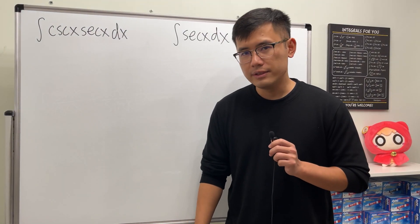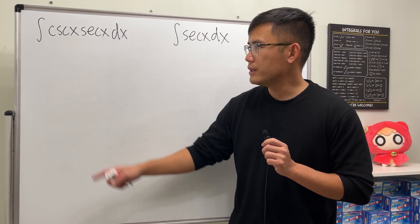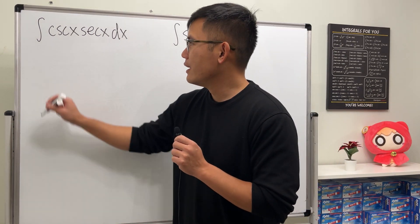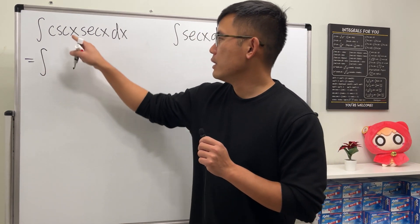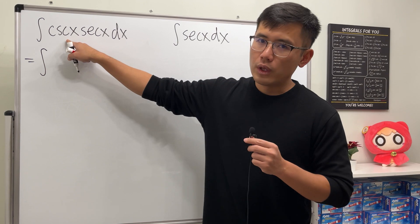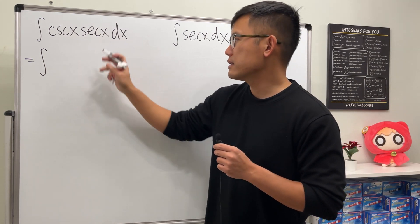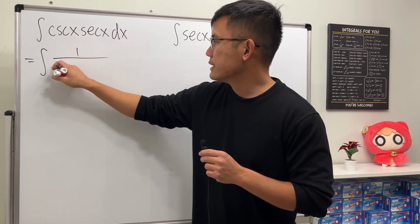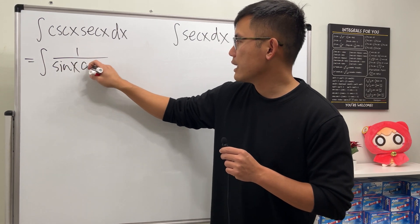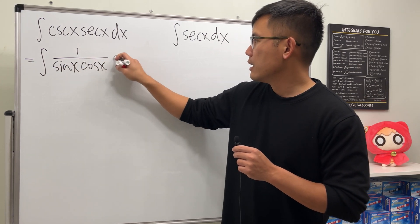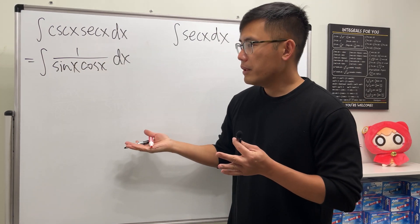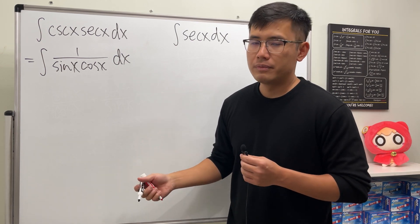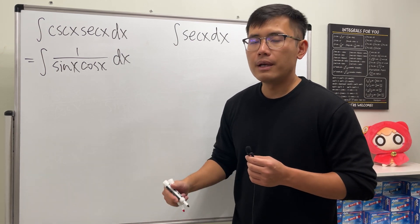I'm going to show you guys a very interesting way to integrate this. Let's begin with the first one right here. I'm going to write this as the integral — we know this is one over sine x, this is one over cosine x, and they are multiplying, so we can just write it as one over sine x times cosine x.